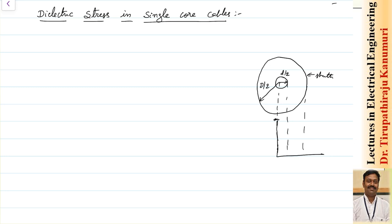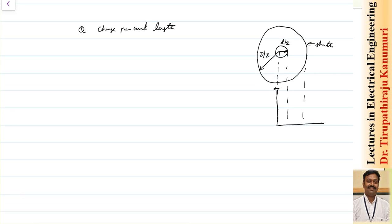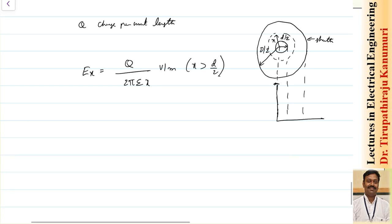Let q be the charge per unit length of the cable. We can find the electric field intensity at any distance x from the center of the conductor, where x is greater than d/2 (the radius of the conductor). This is given by: g(x) = q / (2πε·x), with units of volts per meter, where x > d/2. This is what we have seen in electromagnetics.